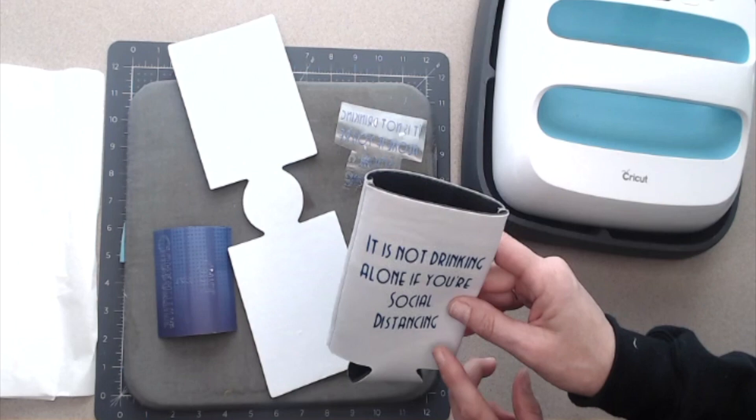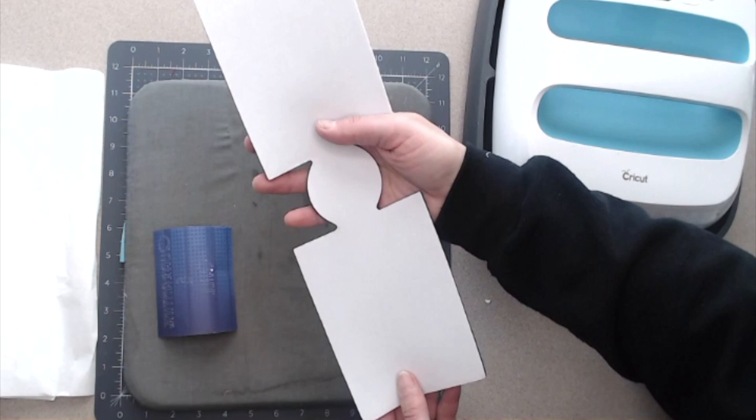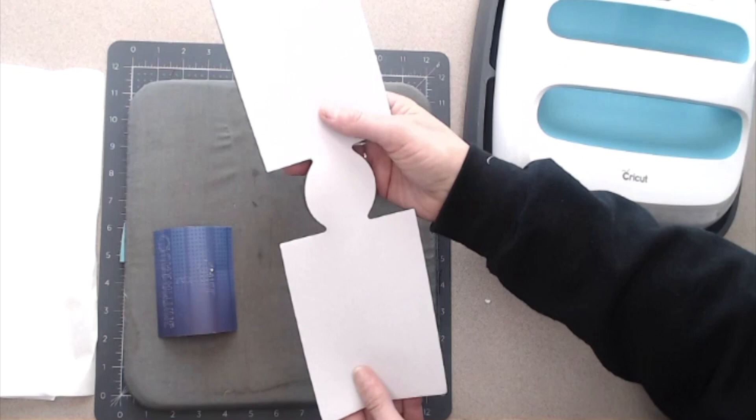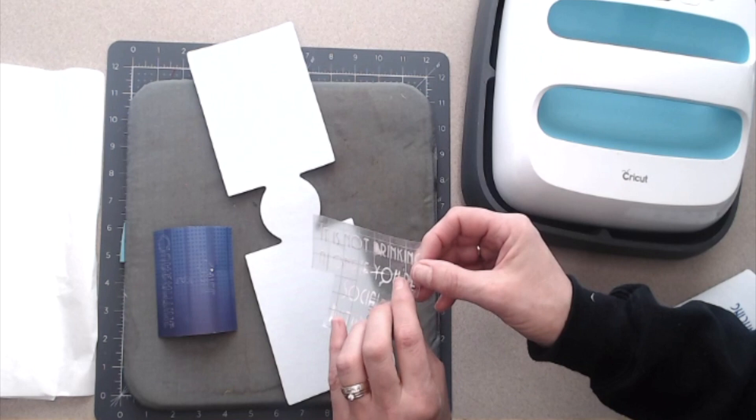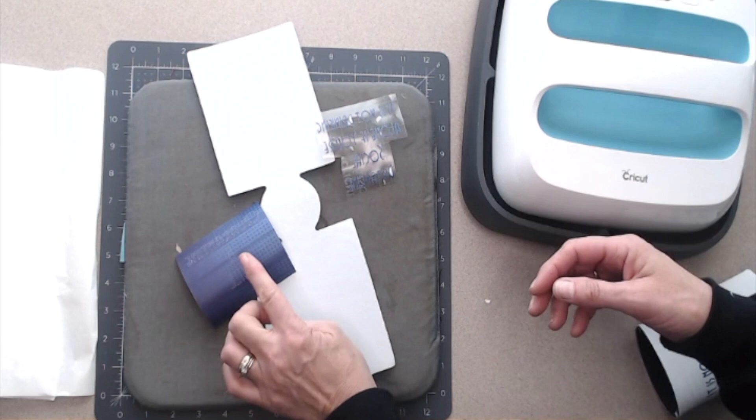So what you need for this project is one of the blanks. Now this is foam on one side and polyester on the other side. You definitely need your design, and I've already weeded out one of the designs. We're going to walk through weeding on this one because infusible ink weeds a little bit differently than your normal vinyl.